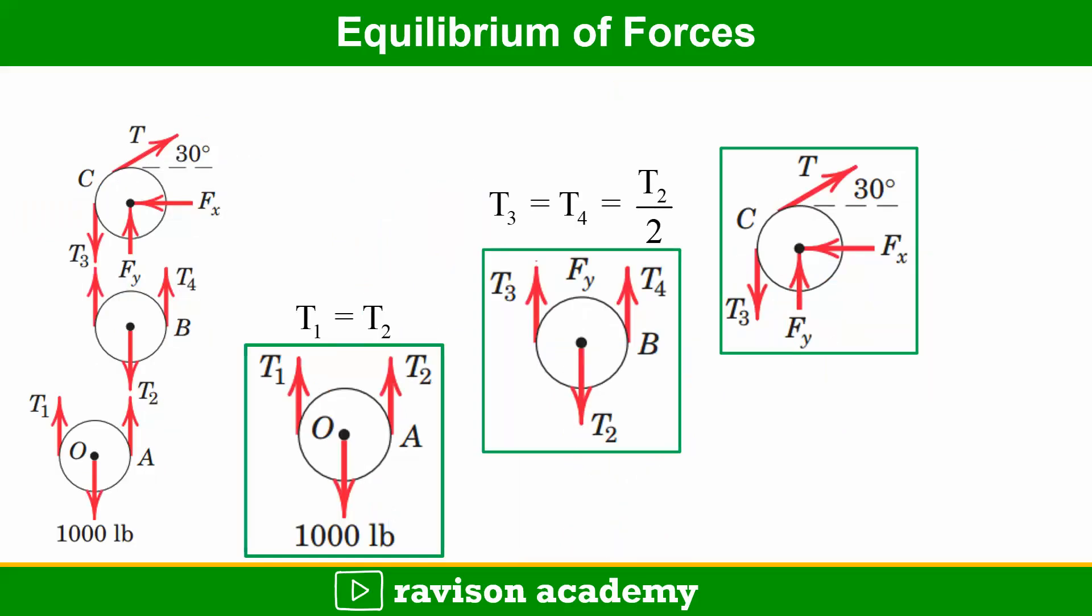Similarly, for pulley C, the free body diagram can be drawn by taking tension T3 pointing downwards and tension T acting at an angle of 30 degrees, and Fx and Fy is acting as per the question.